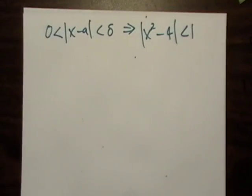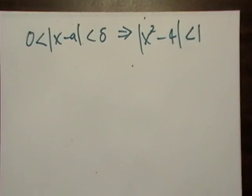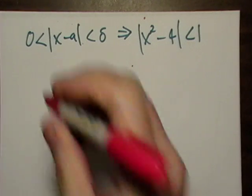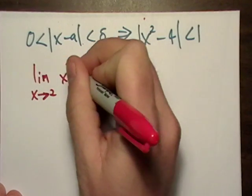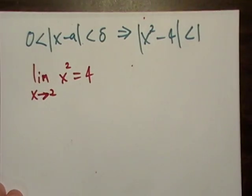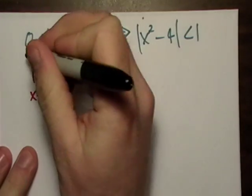Okay, now remember what our original function was. It was the limit, as x goes to two of x squared being equal to four. So let's just go ahead and put a little box around that.